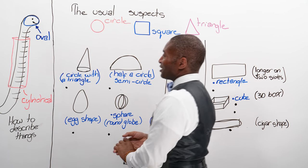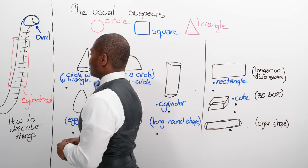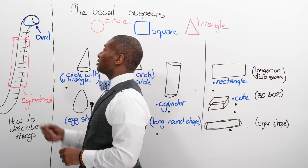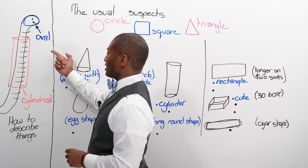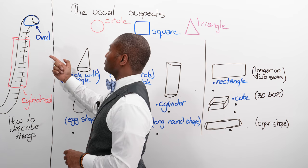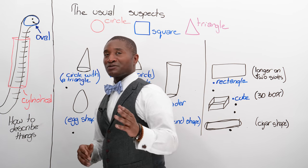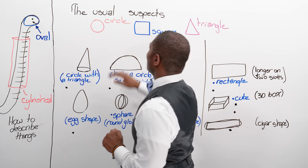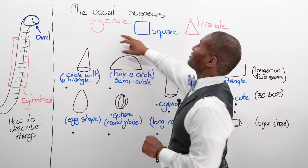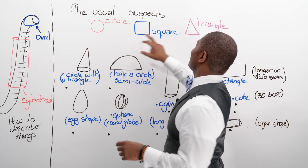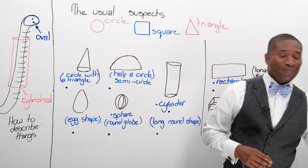So, Mr. E, you're going to get yourself a new suit, and it seems you have a cylindrical body, and you're talking about your head being oval — well, kind of egg-shaped, isn't it? Let's look at the usual suspects: the circle, the square, and the triangle. We talk about these shapes all the time.